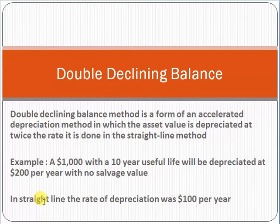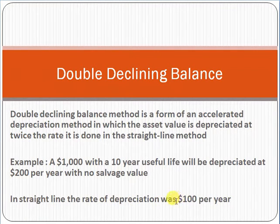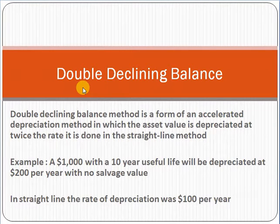Just to clarify: in straight-line depreciation the rate was $100 per year. In double declining balance, you simply multiply that rate by 2. So instead of $100, you deduct $200 per year from the $1,000 asset value. Just remember — double declining balance means you double the straight-line depreciation rate.